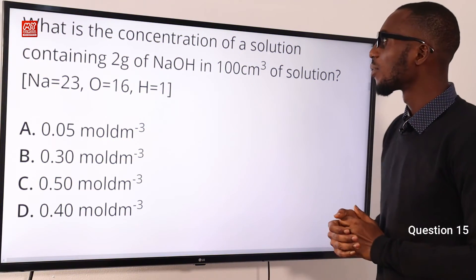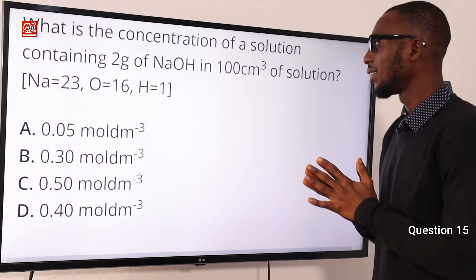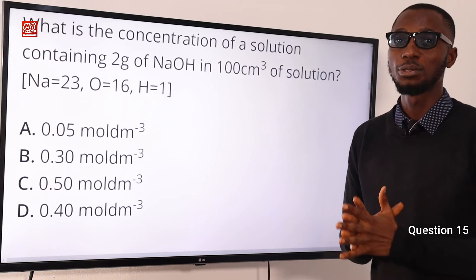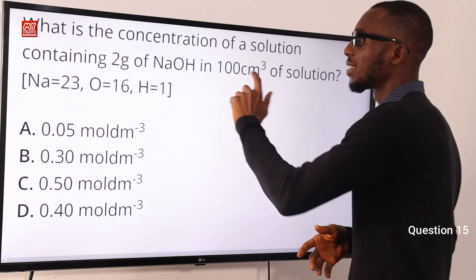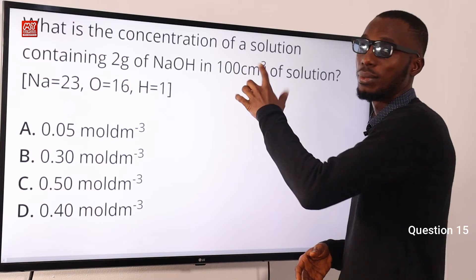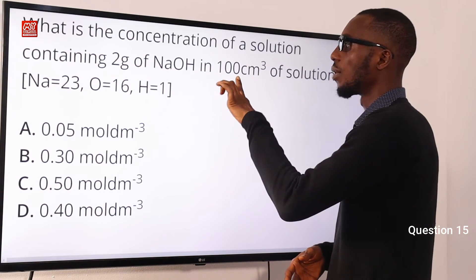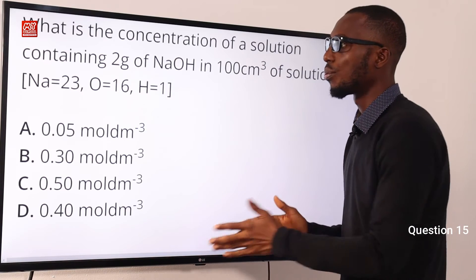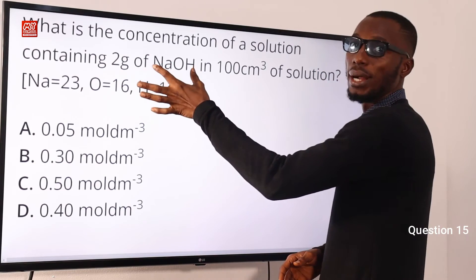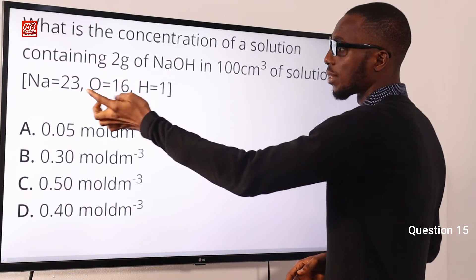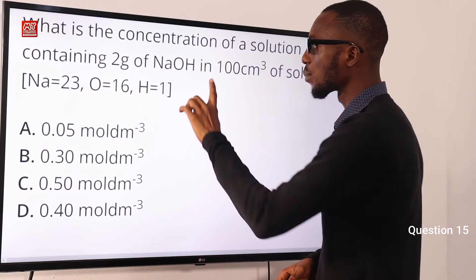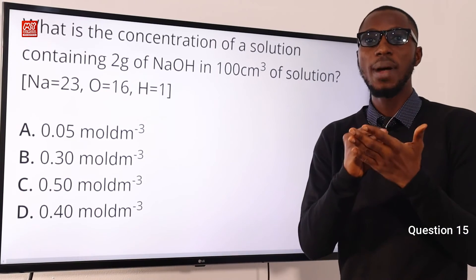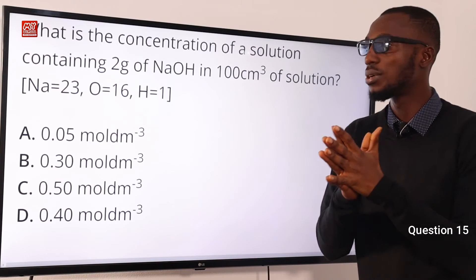Question 15. What is the concentration of a solution containing 2 grams of sodium hydroxide in 100 cm³ of solution? Molar concentration equals mass concentration over molar mass, and our mass concentration should be in g/dm³. Since we have 2 g in 100 cm³, converting to dm³: 2 grams in 100 cm³ means 20 grams in 1000 cm³ (1 dm³). The molar mass of NaOH: sodium is 23, oxygen is 16, hydrogen is 1 — that gives 40 g/mol.